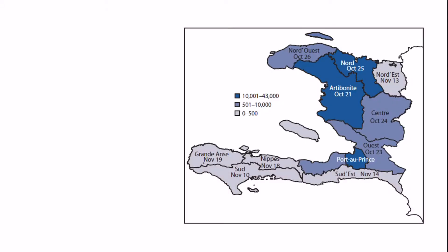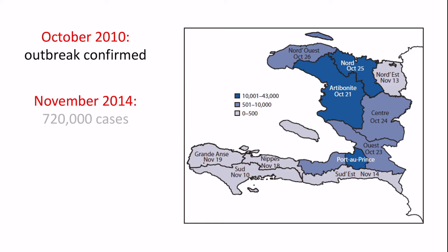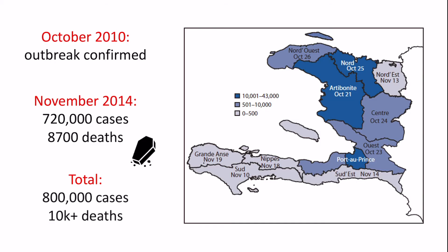In terms of numbers, the cholera outbreak was confirmed by October 2010 — several months after the earthquake. By 2014, there had been 720,000 cases and close to 9,000 deaths (approximately 8,700). The map shows high concentrations around Port-au-Prince and also to the north of the country. By 2020, it was estimated there were roughly 800,000 total cases and over 10,000 deaths, though these are estimations as recording was quite difficult.